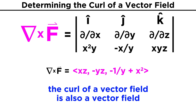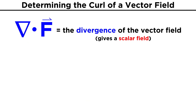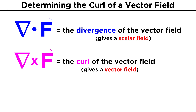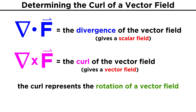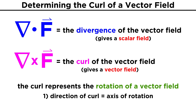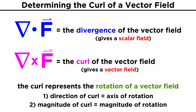Notice that the result is also a vector field. So while the divergence gives a scalar field, the curl gives a vector field. The curl represents the rotation of a vector field F, the direction of the curl being the axis of rotation, and the magnitude of the curl being the magnitude of rotation.